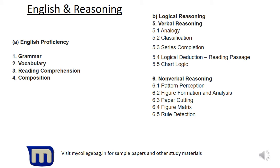Now we'll go over the third section for BITSAT examination. This section will be subdivided into two subsections: English and Reasoning. For the English portion, Grammar, Vocabulary, Reading Comprehension, and Composition will be covered. For Logical Reasoning, the verbal part includes Analogy, Classification, Series Completion, Logical Deduction, and Chart Logic. The second section will be Nonverbal Reasoning with Pattern Perception, Figure Formation and Analysis, Paper Cutting, Figure Matrix, and Rule Detection.